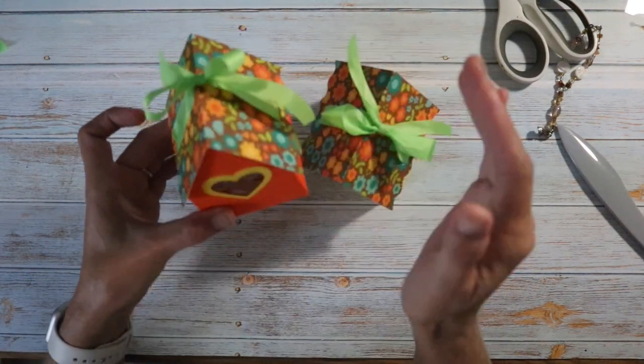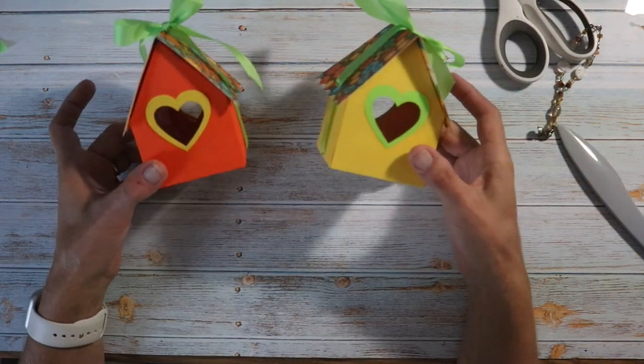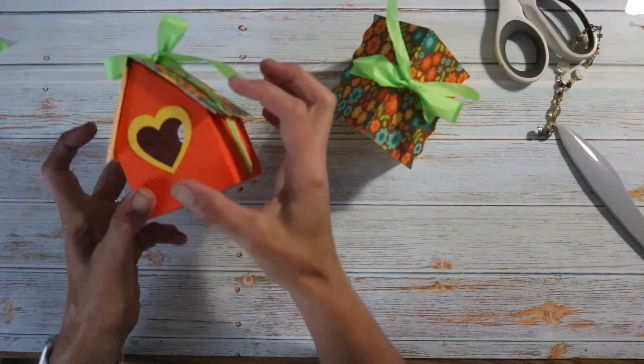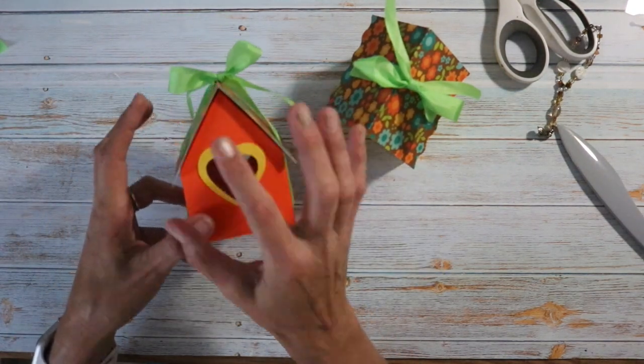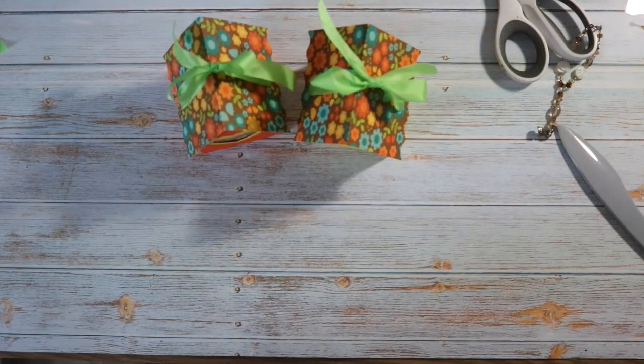And again, to untie it, to get to the goodies, just untie the ribbon, take the roof off and you can access that and then put it back together. If you want to, if the person wants to keep it, they can always glue the roof down to those little flaps that we folded down as another option so they can keep it as a little memento.